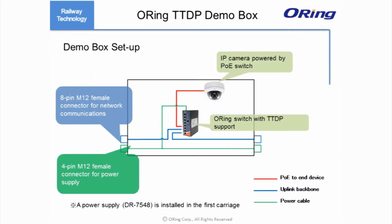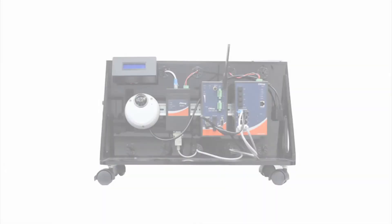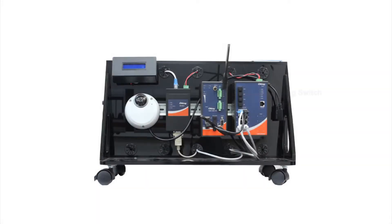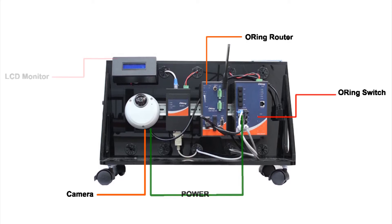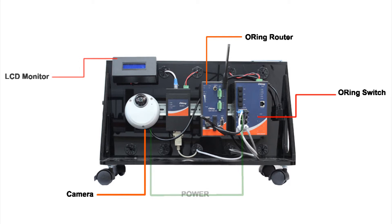ORing has created a demo box simulating deployment in a train. The demo box includes a TDDP-enabled Ethernet switch and an IP camera connected to it. The IP camera is powered by the switch through its PoE port. M2R connectors are used in the demo box to resemble connections in actual trains.